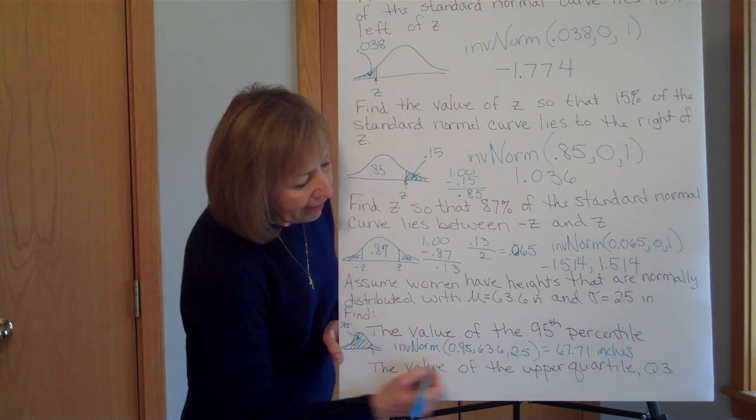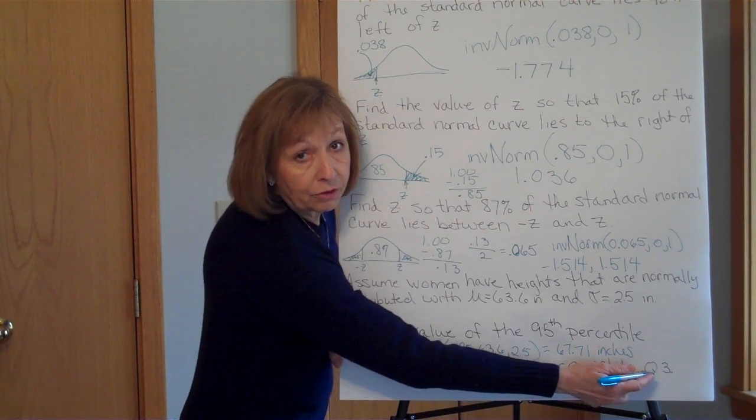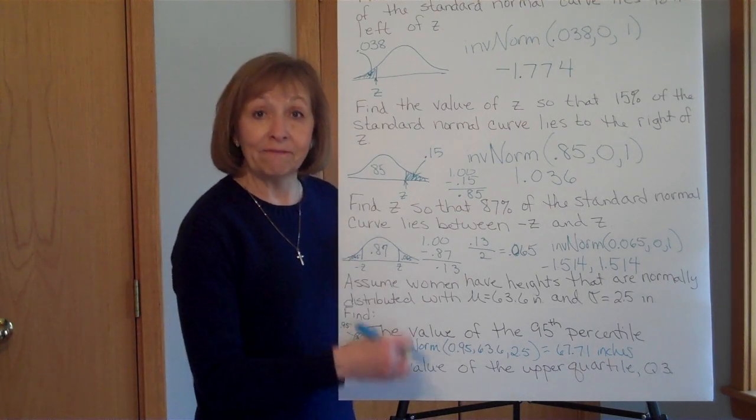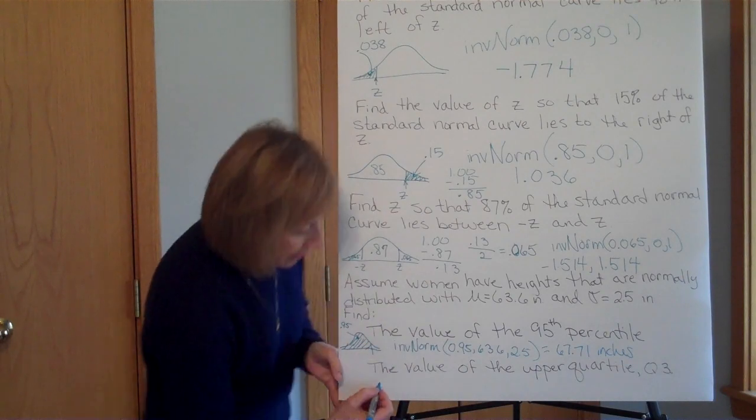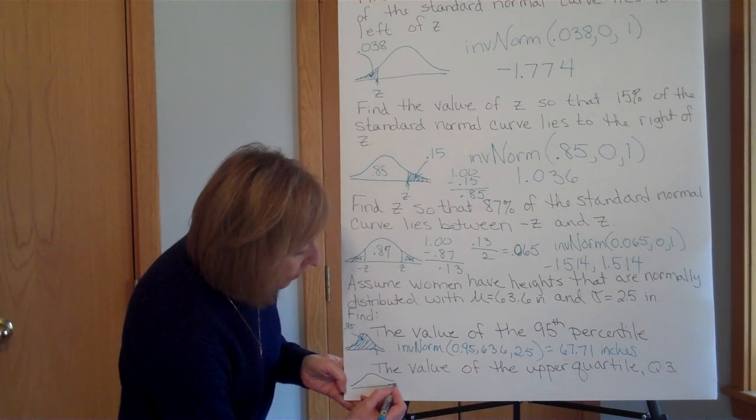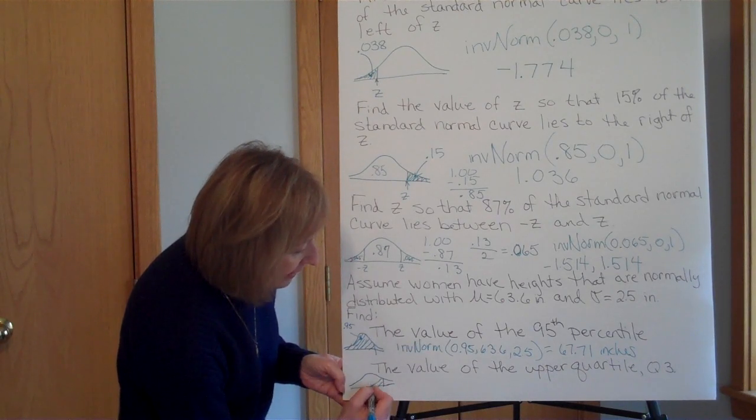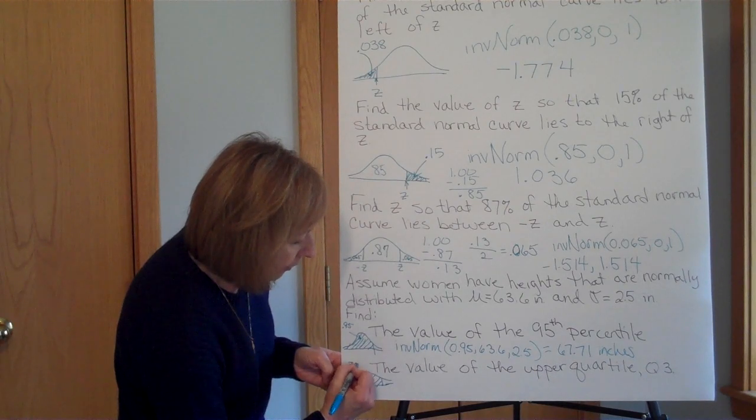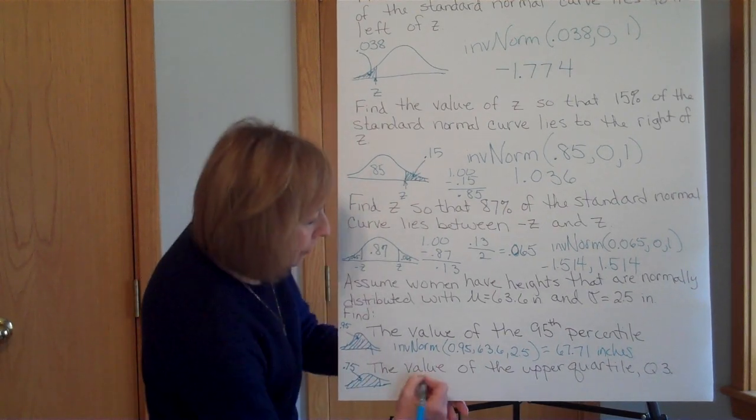So for all of the other heights of women in the population, they are at or below that 67.71 inches. How about finding the value of the upper quartile Q3? Well, remember, the upper quartile Q3 is just the 75th percentile.